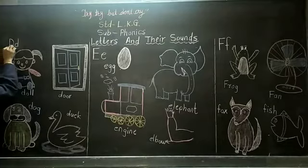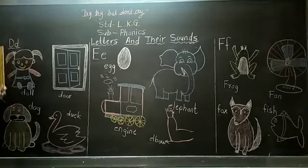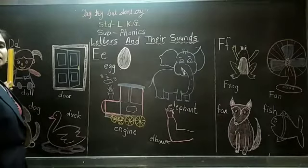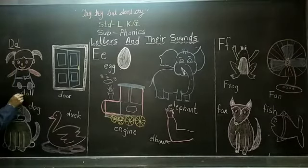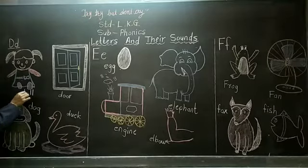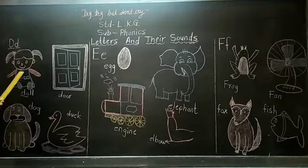Which letter is this? This is capital letter D, small letter D. The sound of D is duh. Say after me, duh, duh. This is the letter D. See, this is the doll. Girls play with this doll.